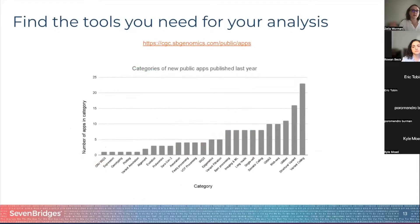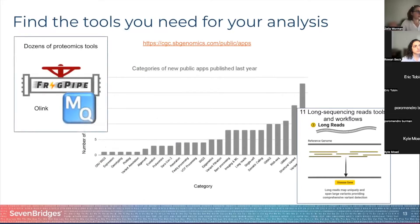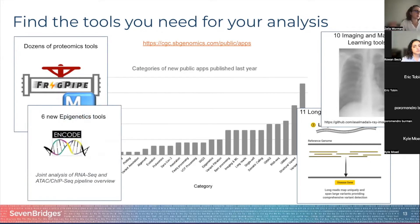Another set of tools we have released in the past year includes 11 new long sequencing tools, including PacBio and ONT workflows to support long-read sequencing. We also released dozens of proteomics tools including FragPipe, MaxQuant, and O-Link, ten new imaging and machine learning tools that can analyze radiology and histochemistry images, and six new epigenetics tools including those from the commonly referenced ENCODE project.